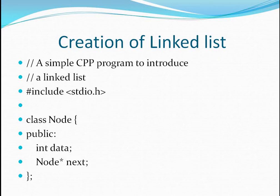Up till now you have only studied the theory part of linked list — that it consists of a node having two fields: the data field and the pointer field. Today I am going to show you with the help of a simple C++ program how you can create a linked list consisting of three nodes. We will first create the nodes, then link them together, and the external pointers to the second and third node will be deleted. Only the external pointer to the first node will remain, because through that you can traverse the whole linked list.